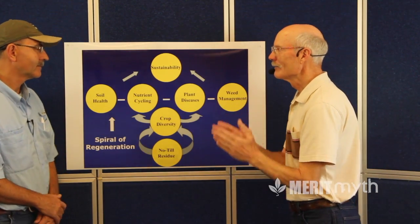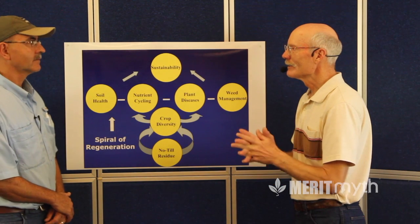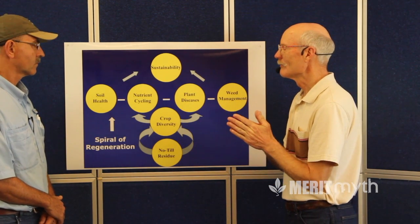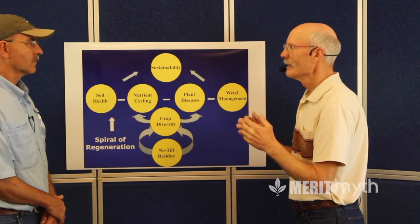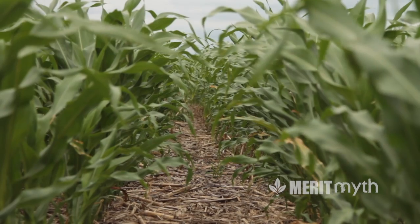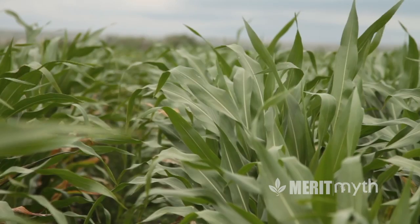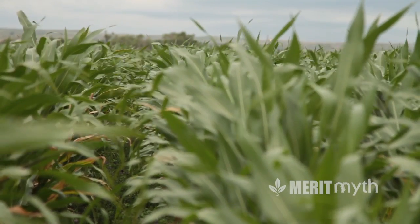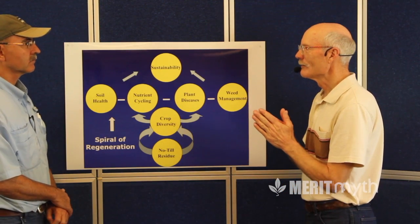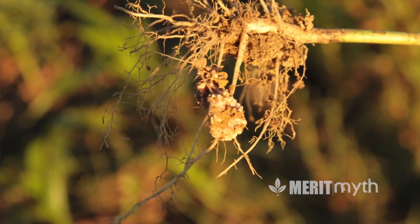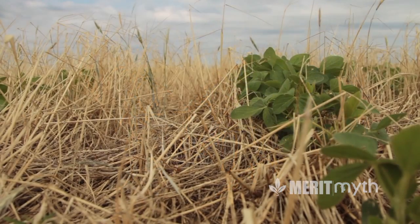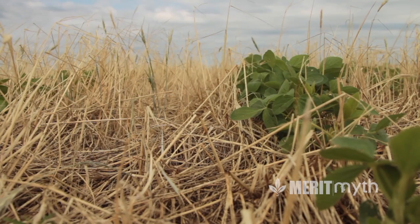For example with nitrogen, producers have reduced the amount by 25 to 35 percent. With phosphorus, some producers have reduced it 50 percent in certain soil types, and some have eliminated the use of phosphorus fertilizer altogether. They're getting healthier plants. Research using lysimeters showed that when you increase the microbial community, you get nutrients into the plants earlier, and therefore the seedlings are healthier.